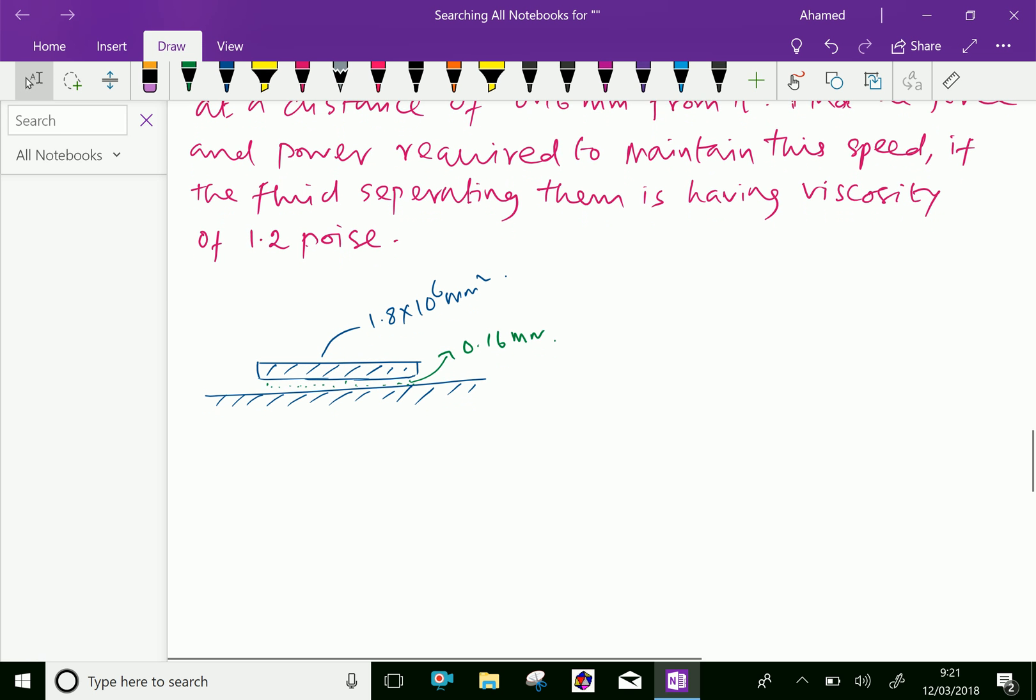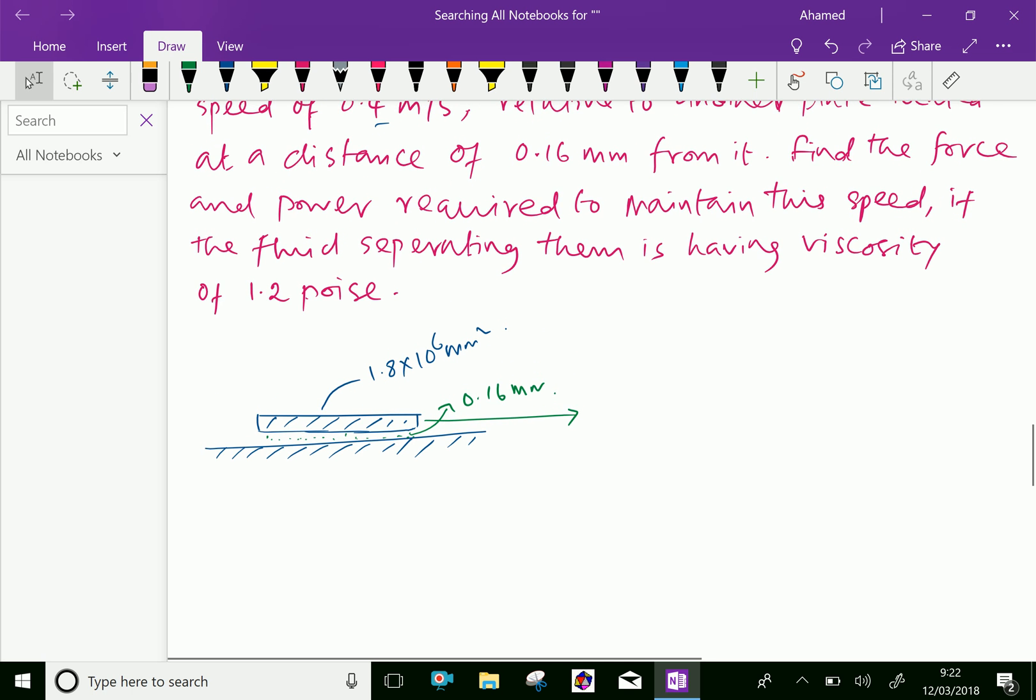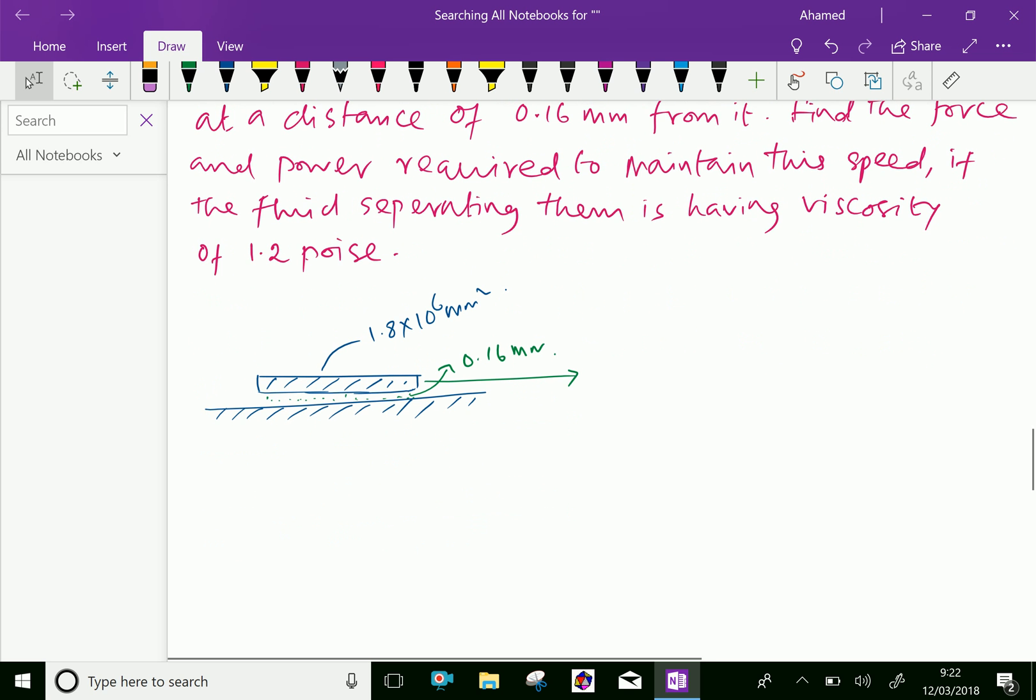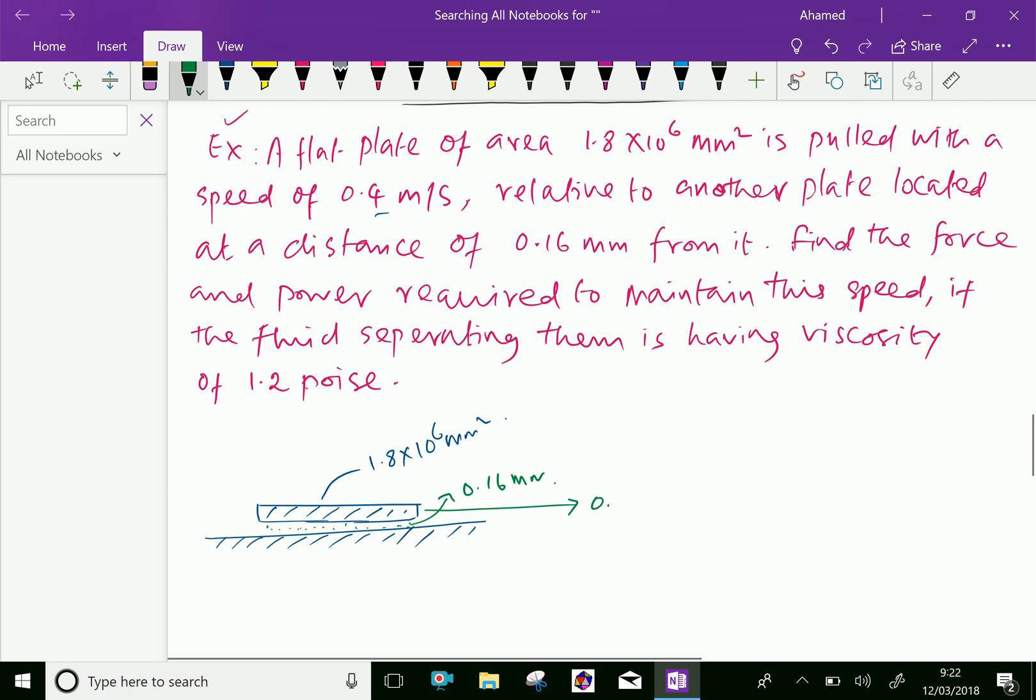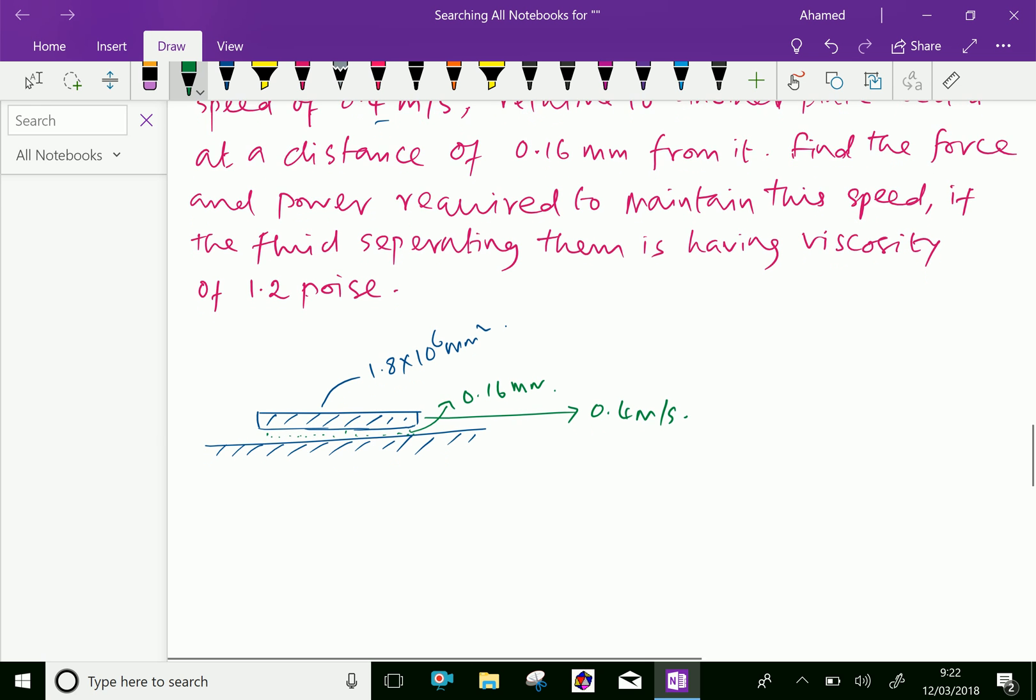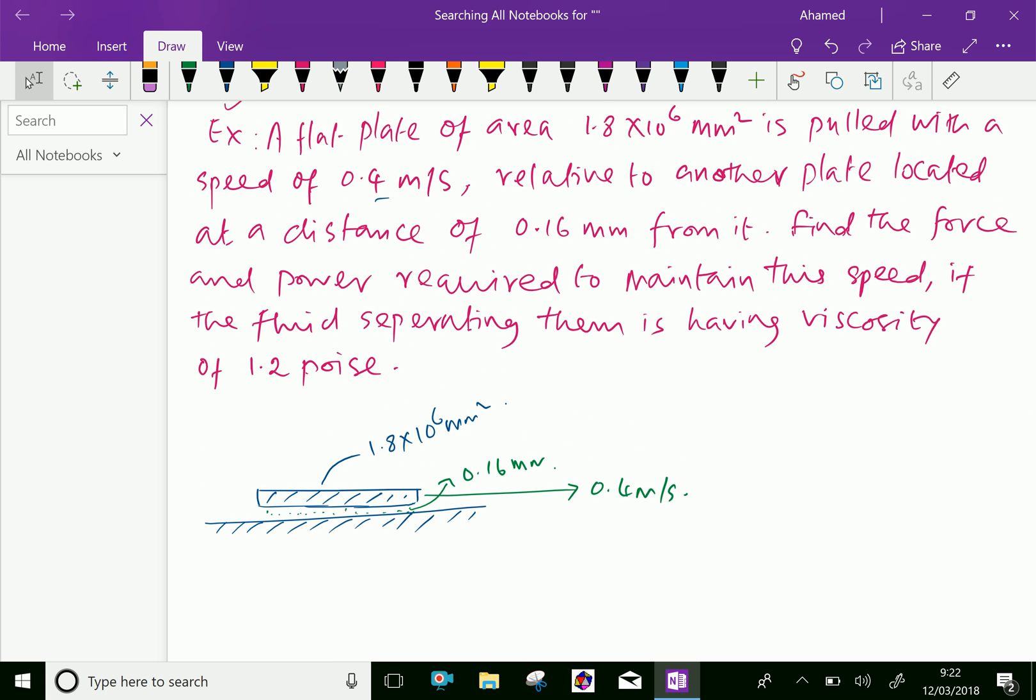Suppose the upper plate is pulled horizontally and it maintains the velocity of 0.4 meter per second. The viscosity of oil is given as 1.2 poise.